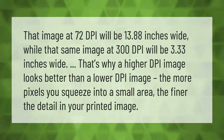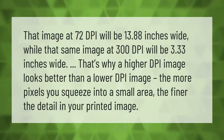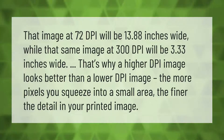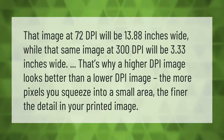That image at 72 DPI will be 13.88 inches wide, while that same image at 300 DPI will be 3.33 inches wide. That's why a higher DPI image looks better than a lower DPI image — the more pixels you squeeze into a small area, the finer the detail in your printed image.